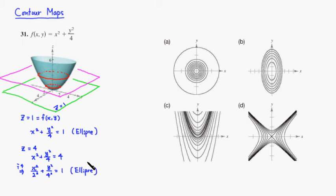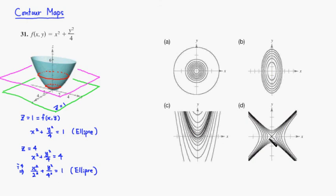So a contour map of this surface is going to be a collection of ellipses. Looking at these contour maps, we want to match up with this function. This one is kind of close but you can see it's actually circular. Here we have a bunch of ellipses, this looks like a bunch of parabolas, and this is a bunch of hyperbolas. So the contour map for number 31 is going to be Part B.